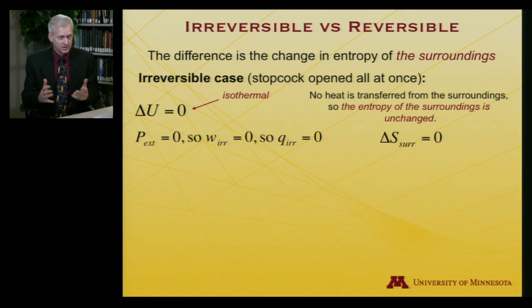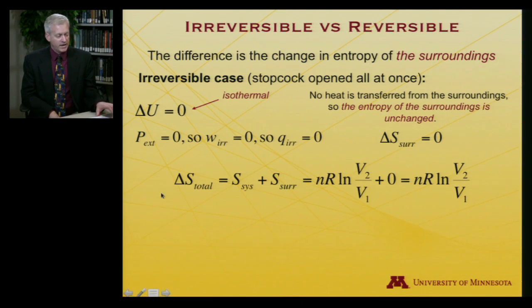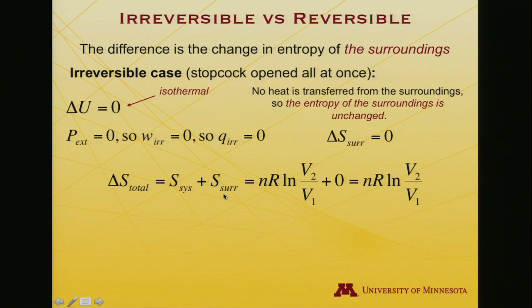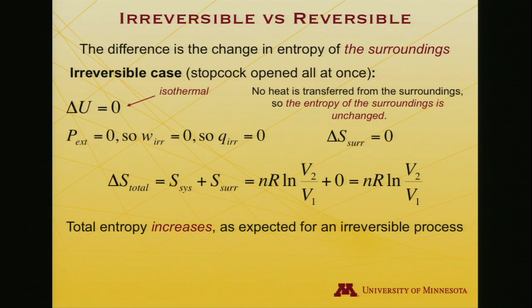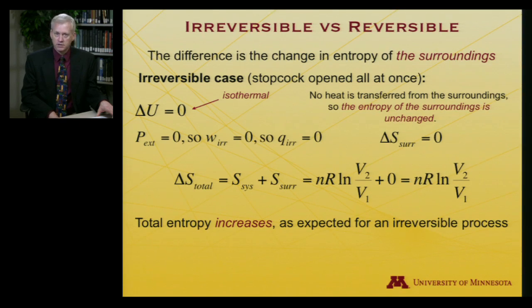And so the net entropy change, system plus surroundings, well, the system, it was a state function. We already know what happened in the system. nR log V2 over V1, but surrounding zero. So for the universe, then, of system plus surroundings, there has been a net increase in entropy. And that's consistent with our statement of the second law. The reversible process, there was no change. The irreversible process, there was a net increase in universal entropy. So total entropy increases as expected. Irreversible process.